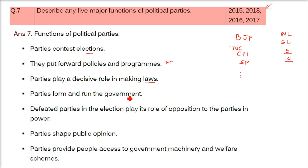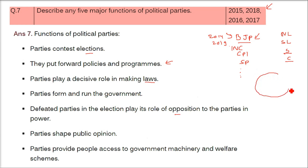Fourth, parties form and run the government — for example, after winning elections in 2014 and 2019, the BJP formed the central government. Fifth, the defeated party plays the role of opposition to the party in power. Although the opposition may seem to have no role today, our Constitution's framers designed the legislature with a governing body and an opposition that looks after the government's actions, protests wrongdoing, and surfaces errors — so the government's wrongdoings can be brought to light by the opposition.